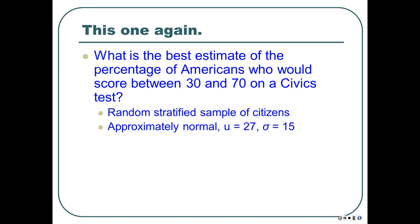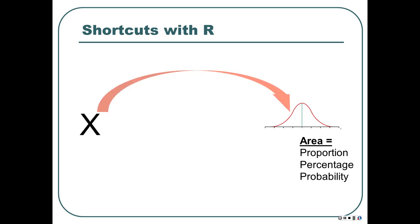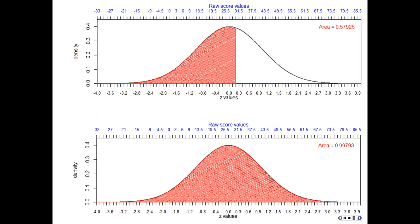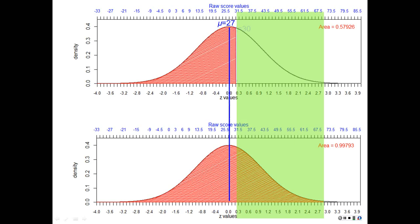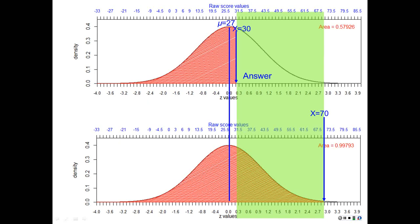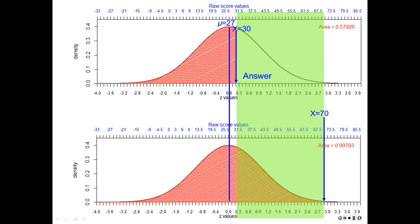For the civics test example — percentage of Americans scoring between 30 and 70 with mean 27 and sd 15 — you need two pnorm commands. Use pnorm(30, mean=27, sd=15) and pnorm(70, mean=27, sd=15). You get 0.57926 and 0.99793. Subtract the smaller from the larger: that gives you the area of the curve between those two values — the proportion of Americans expected to score between 30 and 70.